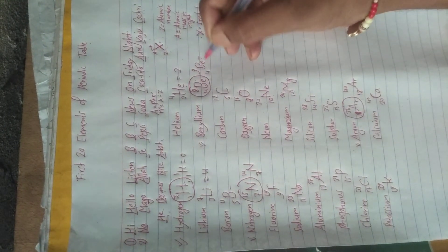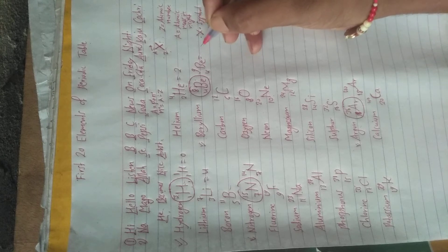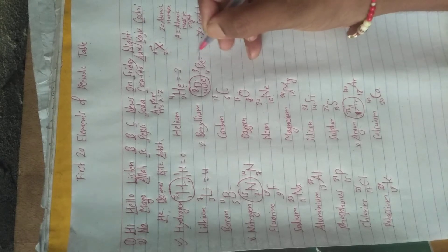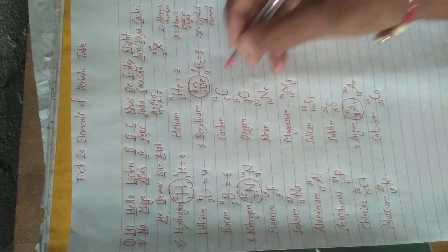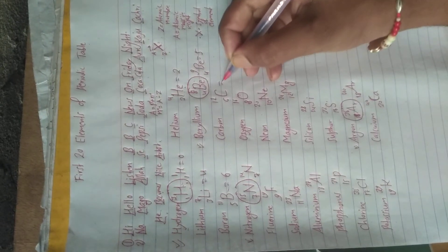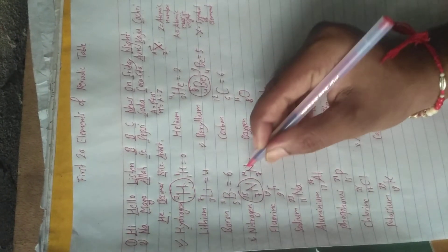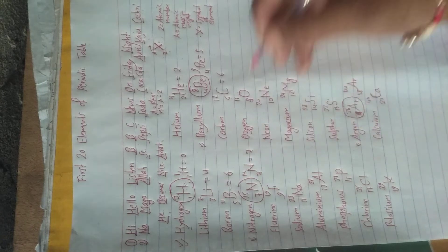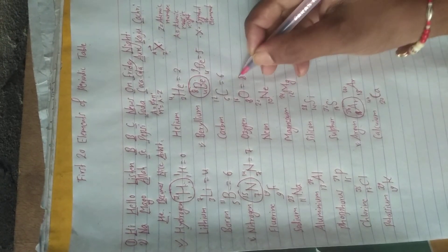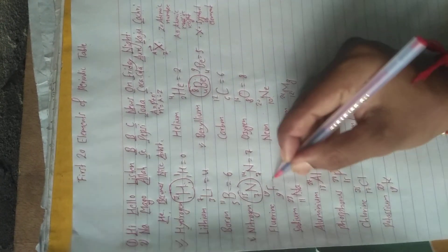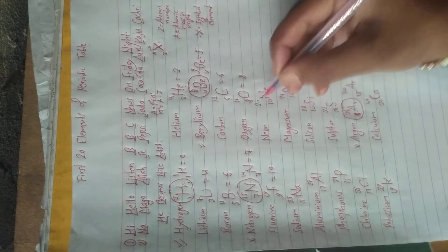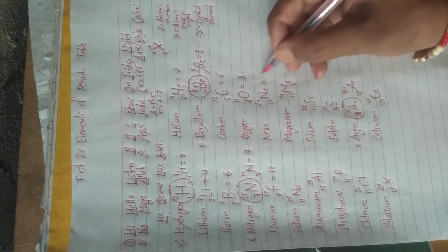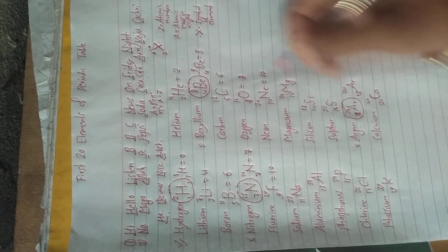Calculating neutrons for the first ten elements: 9−4=5, 11−5=6, 12−6=6, 14−7=7, 16−8=8, 19−9=10, 20−10=10.